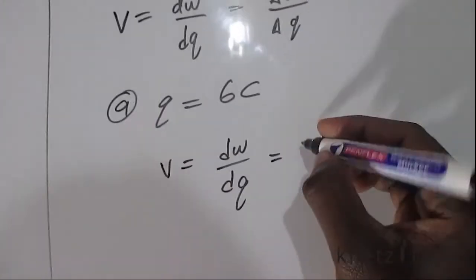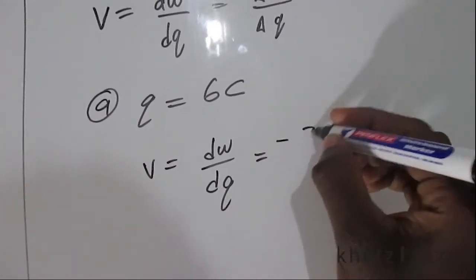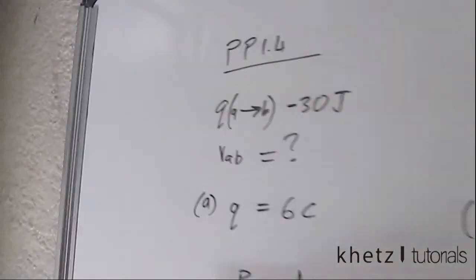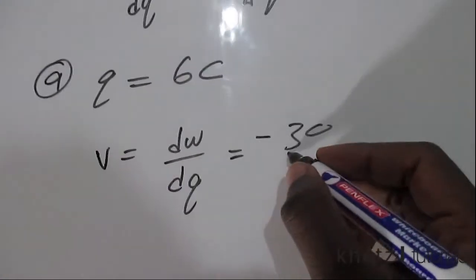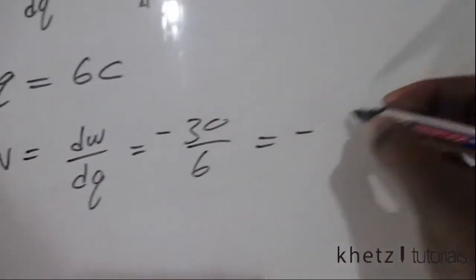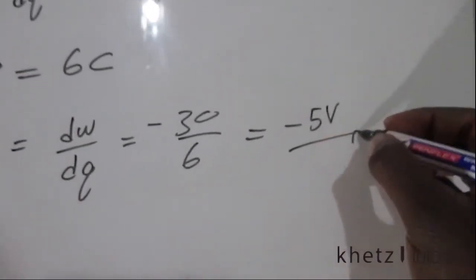We will have negative 30, which comes from the question itself, divided by the given charge. And so the answer is negative 5 volts for part a.